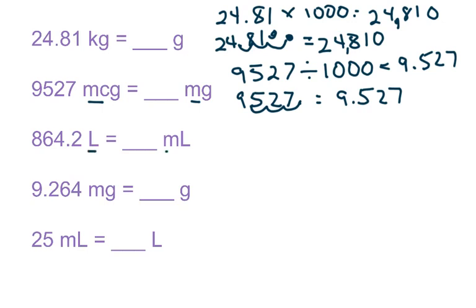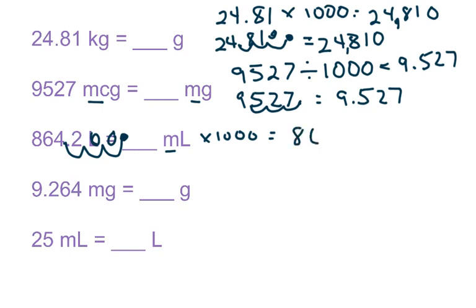Here I'm going from a liter to a milliliter. A single letter is your base, so I'm going from my base down to my milli. When you go down, you multiply by a thousand, or you move the decimal to the right three places — one, two, three. Fill in the holes with zeros. Either way, you get 864,200 as your answer.